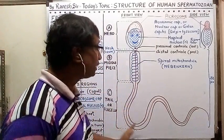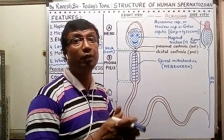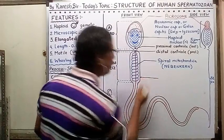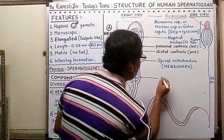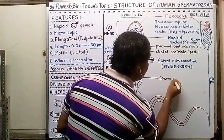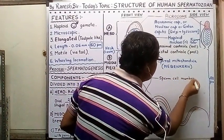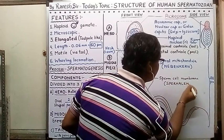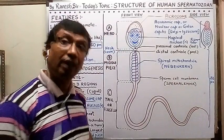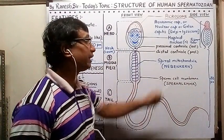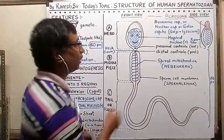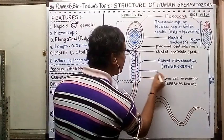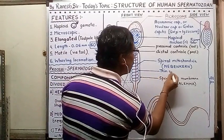The sperm is covered by a cell membrane — the plasma membrane — also called the plasmalemma. There is also a very thin layer of cytoplasm in the region of the mitochondria within the middle piece.